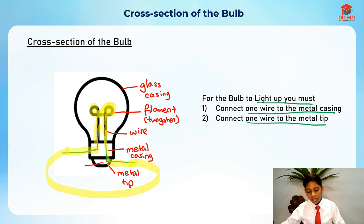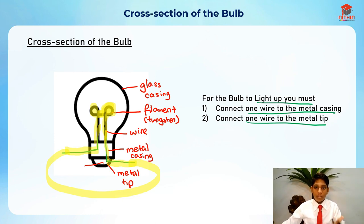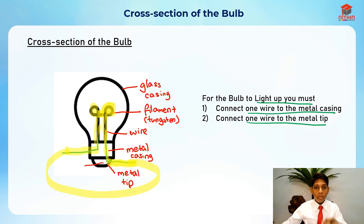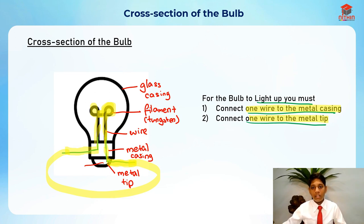The filament heats up from all the electricity and starts to glow. This glowing is where the light is produced. Electricity produces light because the filament glows from the electricity coming through the wires. Always remember to connect one wire to the metal casing and one wire to the metal tip — otherwise it will be an open circuit and the light bulb will not light up.